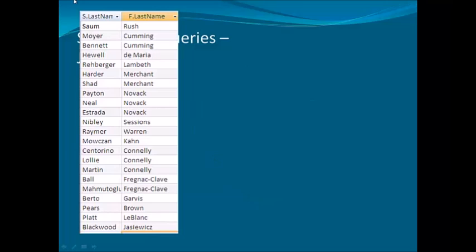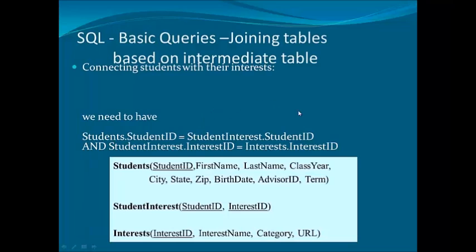You can also use an intermediate table. An intermediate table holds both the primary key of the first table and the primary key of the second table. Here, in the Student_Interest table we have student_ID from the student table and interest_ID from the interest table. We join them using student.student_ID = student_interest.student_ID and student_interest.interest_ID = interest.interest_ID. This is how we join two tables with a many-to-many relationship — students have multiple interests and the same interest belongs to multiple students.